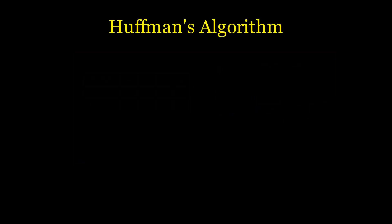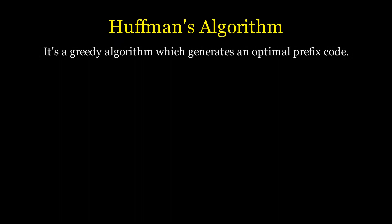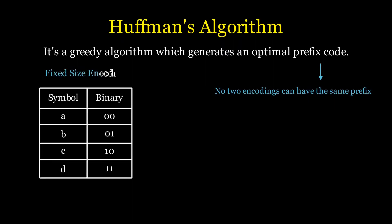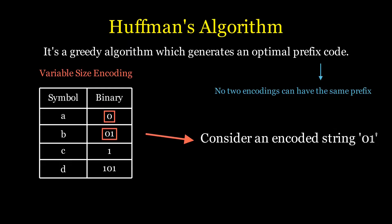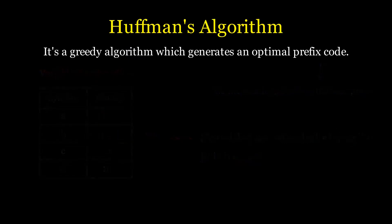Huffman's algorithm is a greedy approach to generate a minimal prefix code. A prefix code simply means that no encoding can be a prefix of another. With fixed-size encoding, no two encodings share the same prefix. However, this might not be true for variable-size encoding — for example, A could be a prefix of B. This is a problem because decoding becomes ambiguous in such situations. To adhere to the prefix code constraint and still get an optimal encoding, we create a Huffman's tree.